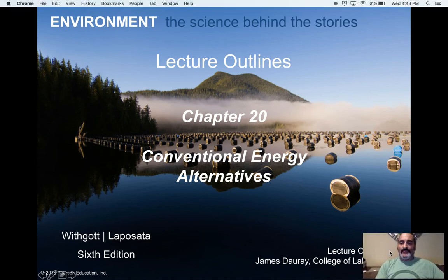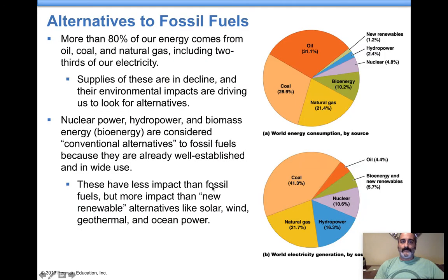Welcome to APES Chapter 20 Lecture Part 1. This chapter is titled Conventional Energy Alternatives, and these are alternatives to fossil fuels. More than 80% of our energy comes from fossil fuels, and two-thirds of our electricity production. When we talk about energy needs, we're talking about heating and cooking — quite a bit of our energy needs are reliant on fossil fuels.